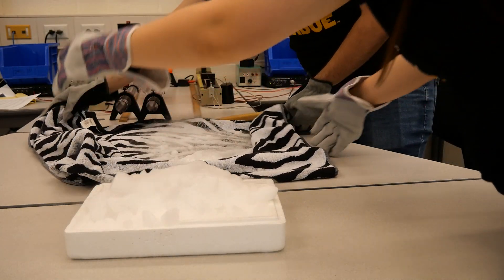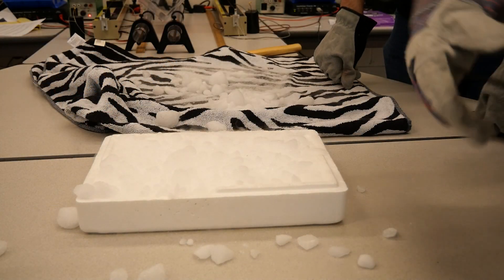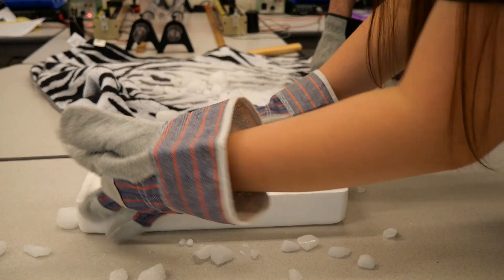Once you take the dry ice off the towel and into the styrofoam tray, use your gloves to spread it around and make sure you have an even level. You want the most surface area possible, so the more even your dry ice is, the better.